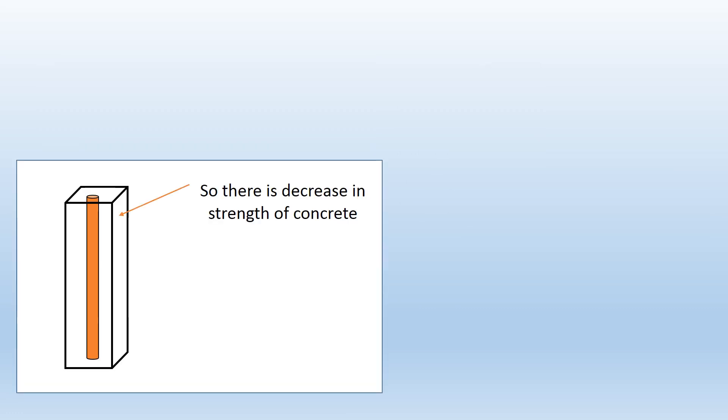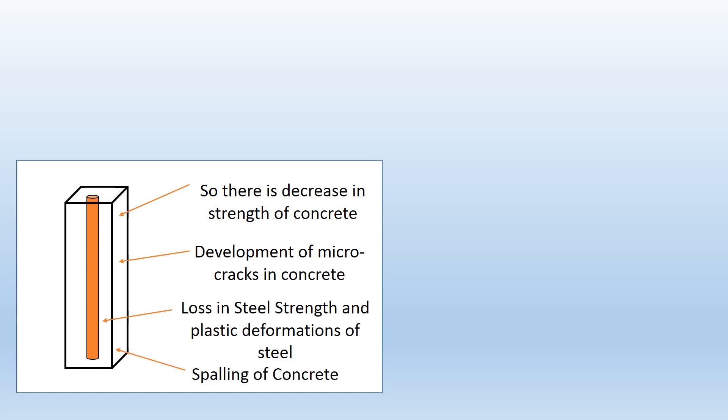So a decrease in strength of concrete is initiated with the decomposition of concrete. The micro cracks are initiated in concrete with the dehydration and decomposition of concrete. At the same time, a loss is initiated in steel strength and the development of plastic deformations occur in steel. The spalling of concrete also occurs at the same time.